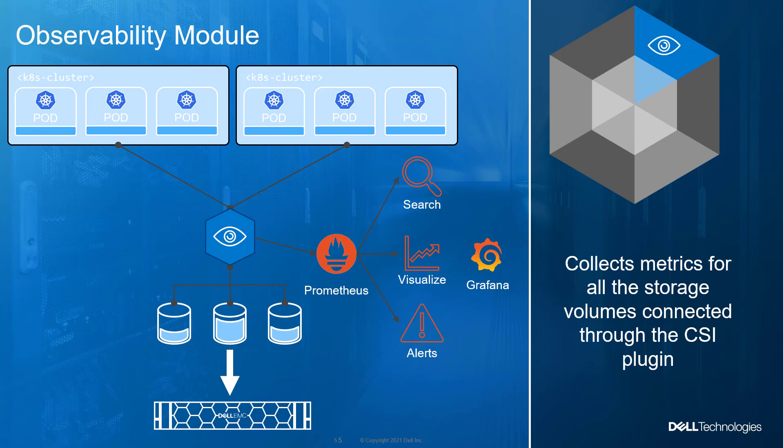The observability module is delivered as an open telemetry agent that collects array-level metrics for storage to scrape them into a Prometheus database. The integration is as easy as creating a Prometheus service monitor for Prometheus, and that's it. With the observability module, you will gain visibility not only to the capacity of the volumes you manage, but also to their performance in terms of bandwidth, IOPS, and response time. Thanks to pre-canned Grafana dashboards, you will be able to go through this metrics history and see the correspondence between the persistent volume claims, persistent volumes, and LUNs or fileshares in the backend array.